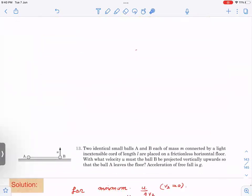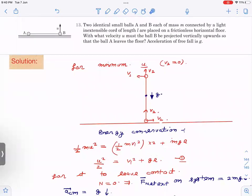It's a very good question, very conceptual question. So in this now, suppose this ball A is just able to reach to this point, right? It is just about to leave contact. Suppose velocity is V2 right now. Here also velocity will be V2 from the string constraint, along the length velocity should be same. If this velocity is V1, then this velocity will also be V1.